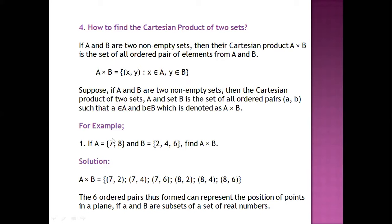For example, if A = {7, 8} and B = {2, 4, 6}, then we have to find A cross B. A cross B will be written as (7, 2) — we take the first element of A and first element of B making ordered pair (7, 2). If we take first of A and second of B, it makes (7, 4).